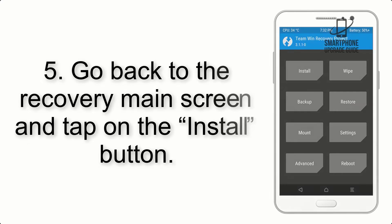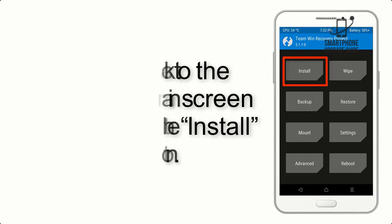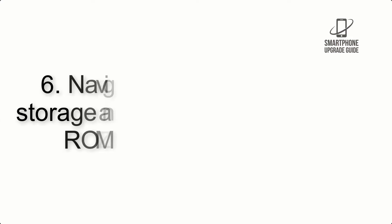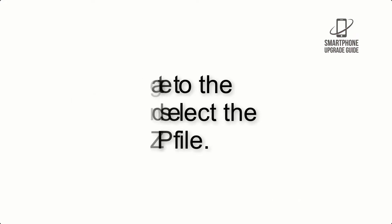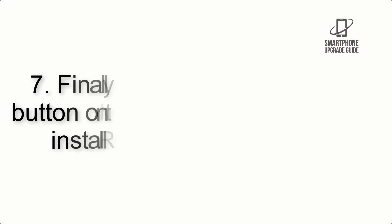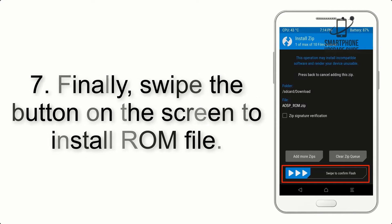Step 5: Go back to the Recovery main screen and tap on the Install button. Step 6: Navigate to the Storage and select the ROM zip file. Step 7: Finally, swipe the button on the screen to install the ROM file.